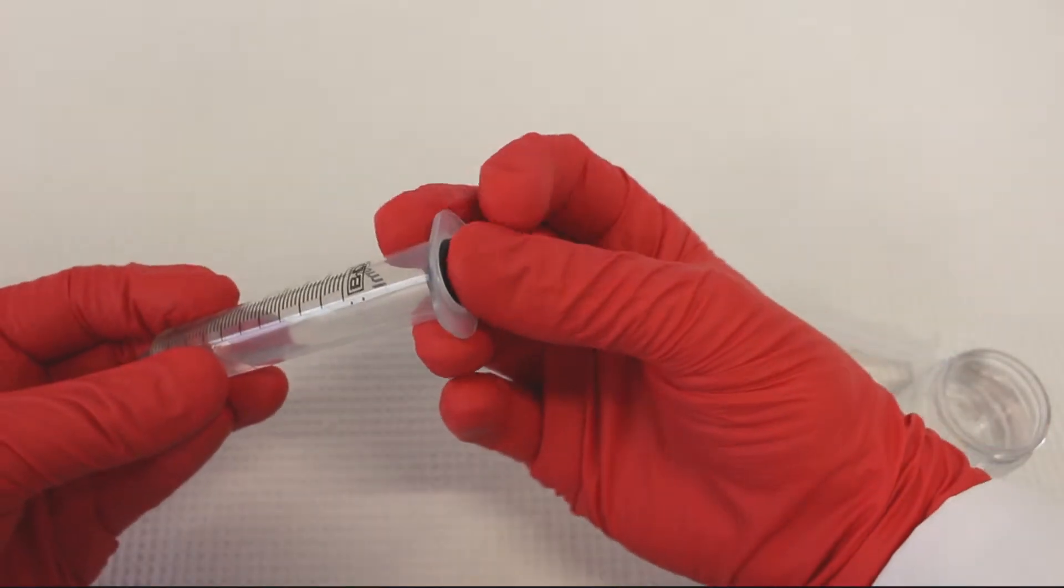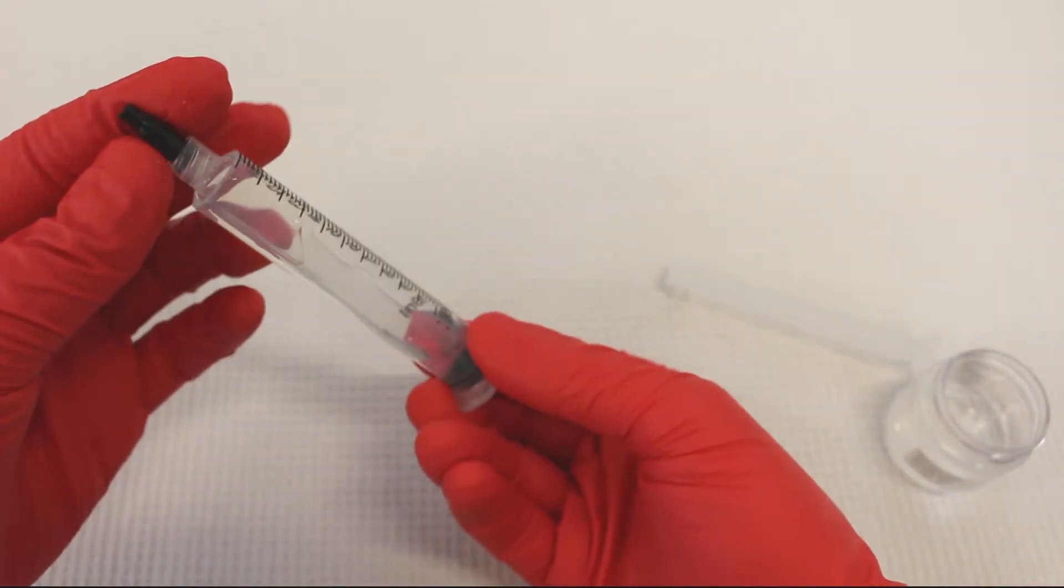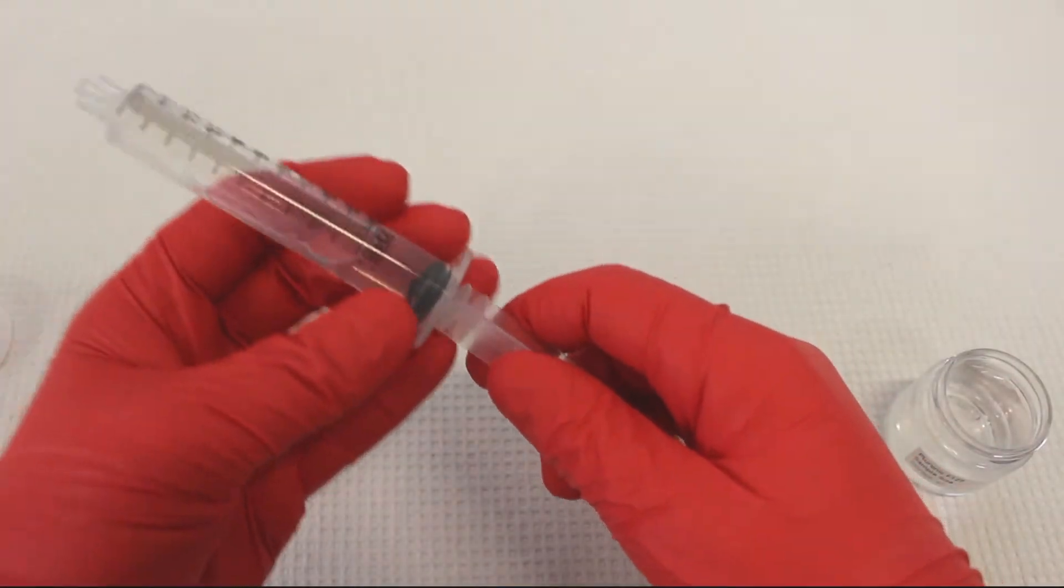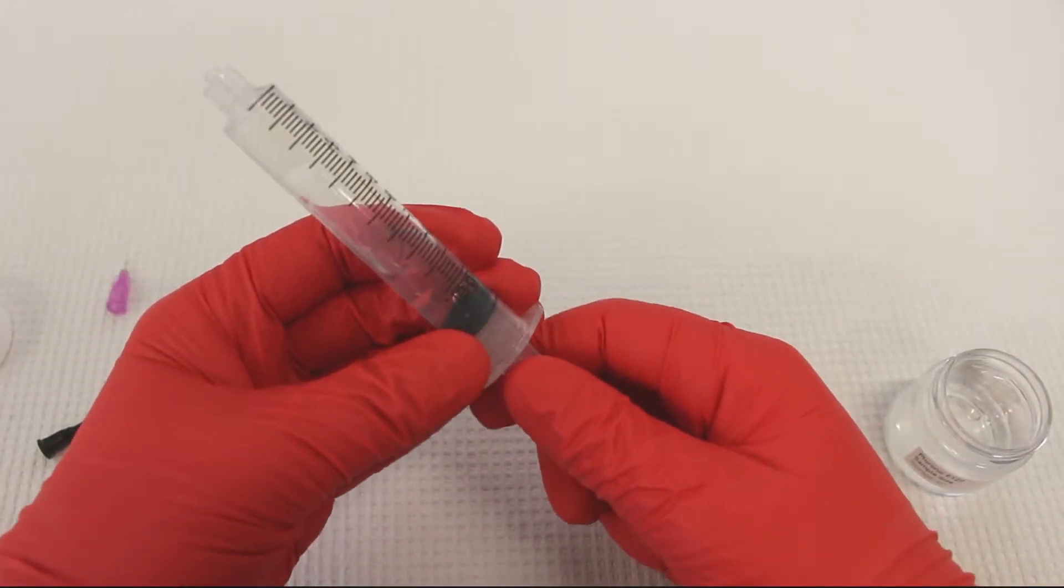Carefully add the black stopper to the top of the syringe. Invert your syringe, then remove the cap. Use the plunger to push the material and stopper to the top of the syringe.